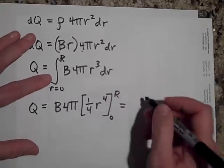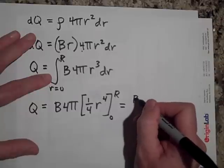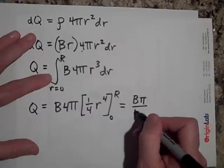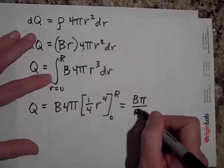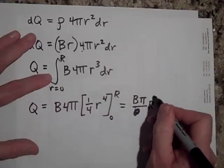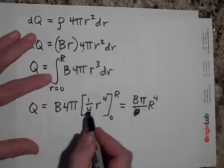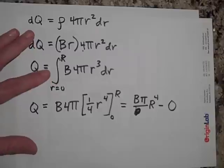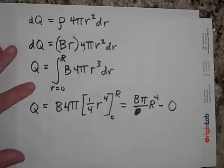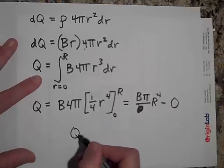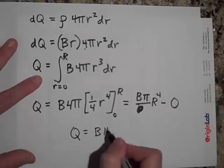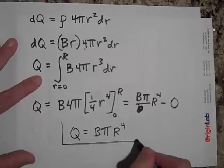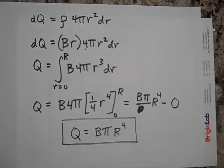Now when I put in those values, when I put in the R, I'm going to get B pi all over R to the, times R to the fourth. The 4's cancel. And then minus zero. Does that work out? Yeah, that works out. So what is the total charge enclosed? B pi R to the fourth. That's the total charge enclosed.